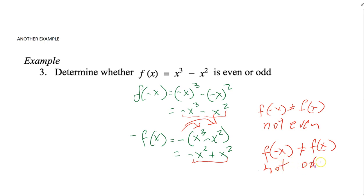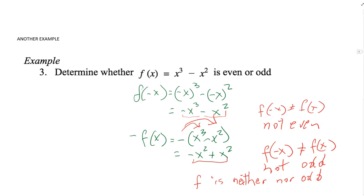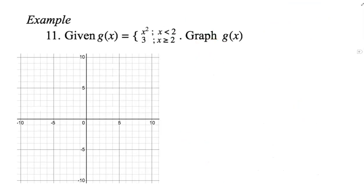Since f of negative x is not equal to f of x and f of negative x is not equal to negative f of x, the function is neither even nor odd. That concludes our discussion of even and odd functions — shown both graphically and algebraically.